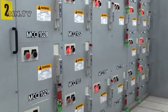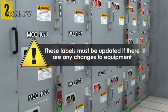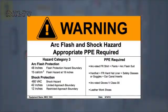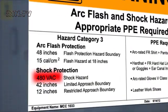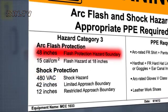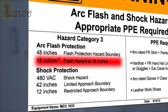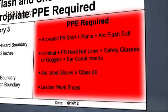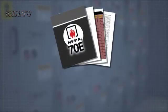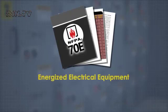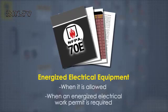NFPA 70E clarifies equipment labeling for equipment that is likely to require worker maintenance while energized. These labels must be updated if there are any changes to the equipment. The labels alert the field worker to: nominal system voltage, arc flash boundaries, and one of the following — incident energy and working distance, minimum ARC rating of clothing, site-specific PPE level, and PPE category. NFPA 70E also contains information about working on energized electrical equipment, such as when it is allowed and when an Energized Electrical Work Permit is required.